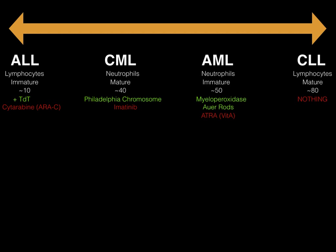AML is treated with all-trans retinoic acid, also known as ATRA — that is vitamin A. You only use this treatment for the M3 variant of AML. You don't need to know any other subtypes except M3, which you treat with vitamin A. The M3 variant will stain positive for myeloperoxidase and you'll see Auer rods on a smear. For chronic lymphoid leukemia, you do nothing — these are old patients with a massive number of lymphocytes, they're asymptomatic. You only treat CLL if the patient is symptomatic; usually they die with CLL so you don't put them through harsh chemotherapy.